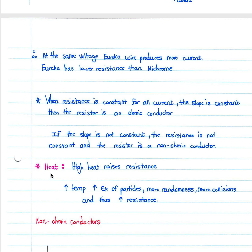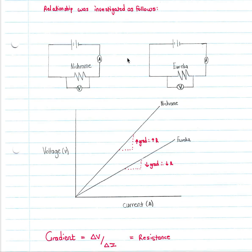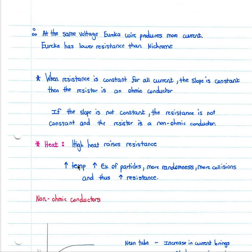We need to know how heat affects resistance. High heat raises resistance, which is why Ohm's law requires a constant temperature — any change in temperature changes the resistance. As we increase temperature, we increase the kinetic energy of the particles in the conductor, causing more randomness and more collisions, which increases resistance and creates a higher resistance path for the flow of charge.